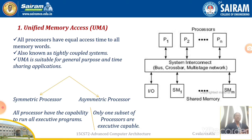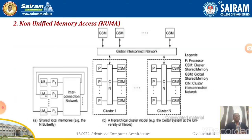To summarize UMA: in this model the physical memory is shared among all processors. There are N processors from P1 to Pn and N shared memories SM1 to SMn. These processors and shared memories exchange information through a system interconnect bus network, crossbar, or multi-stage network.